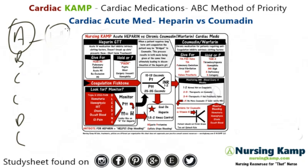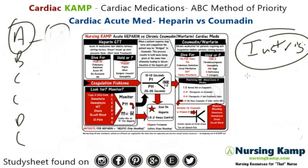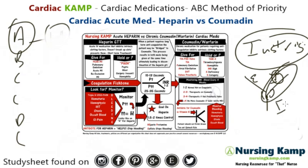Let's talk a little bit about what heparin does. Heparin works on the clotting cascade. There's an extrinsic versus an intrinsic side, and heparin works mainly on the intrinsic side. The intrinsic side is more acute, so heparin is an acute medication.